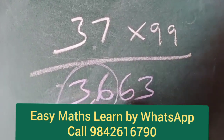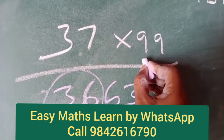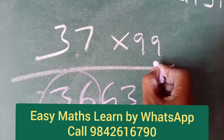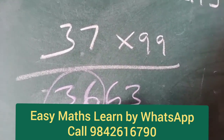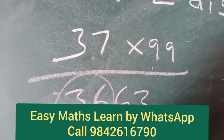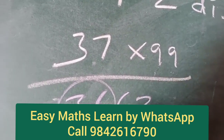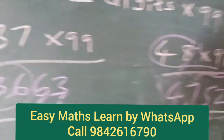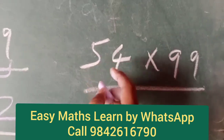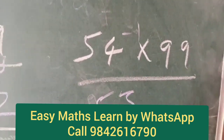Here it is. What do you do? Each digit minus from 9. 9 minus 1 — third place. 9 minus 2 — fourth place. 9 minus 3: 6. 9 minus 6: 3. See? Here it is. 54 into 99. 54 minus 1: 53. And so the first part.